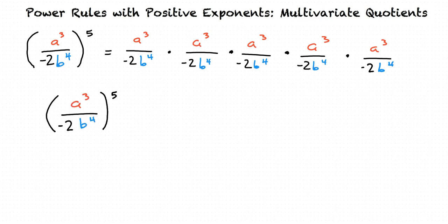We can multiply the exponents of each individual term inside the parenthesis by the exponent outside the parenthesis. This is written as a to the 3 times 5 power over negative 2 to the 1 times 5 power, b to the 4 times 5 power.